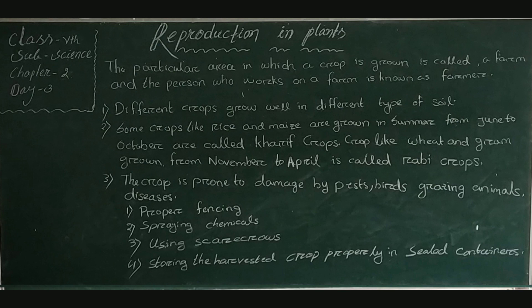Now, while growing a particular crop, some points should be kept in mind. First, different crops grow well in different types of soil, so the seeds should be sown in the right type of soil to ensure maximum production. Second, it is very important to use good quality seeds; otherwise, we will not obtain a good and healthy crop.